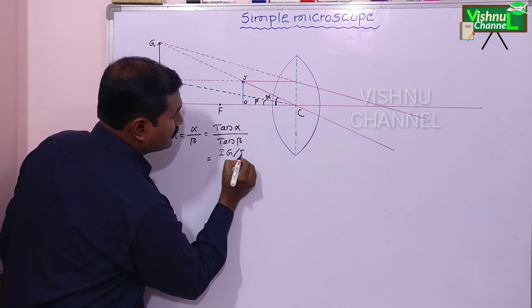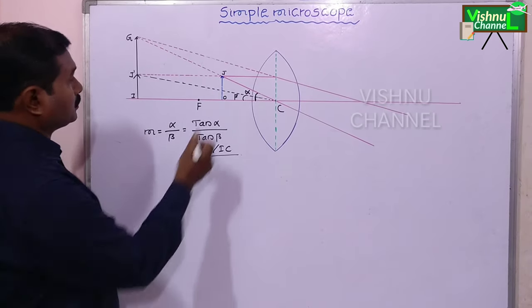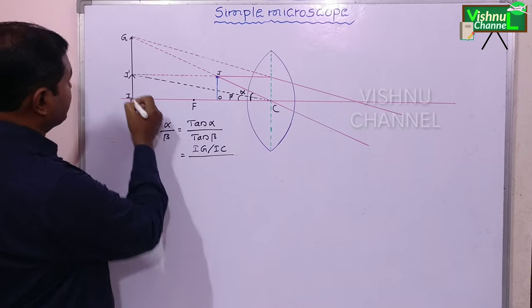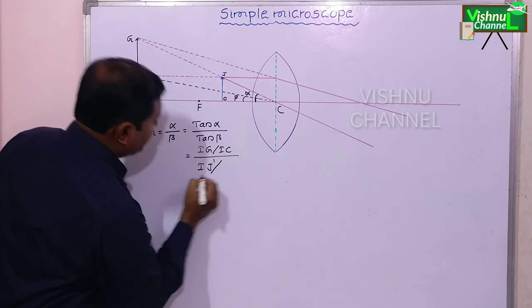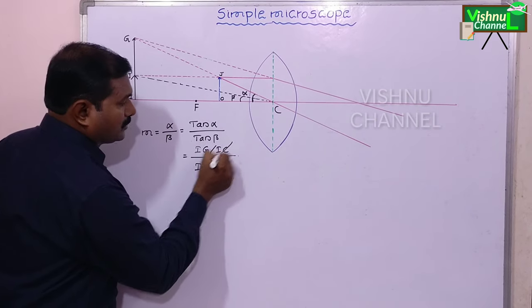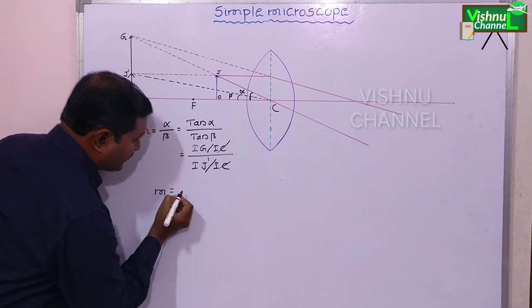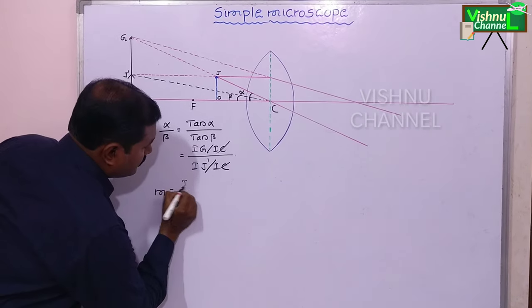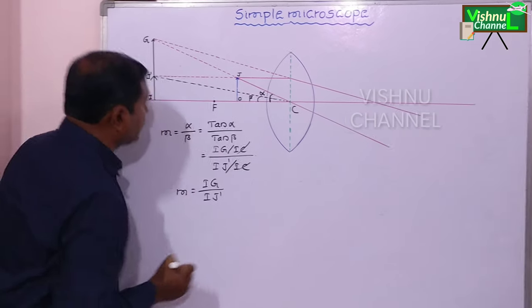Tan beta equal to opposite side IJS by adjacent side IJ. So here IJ, IJ cancelled. Magnifying power m is equal to IJ by IJS.